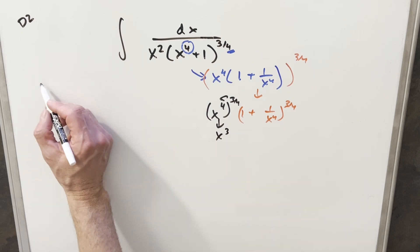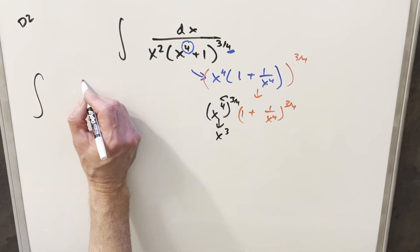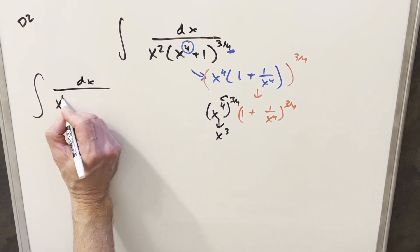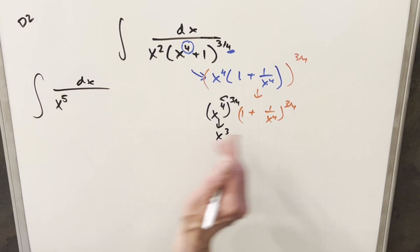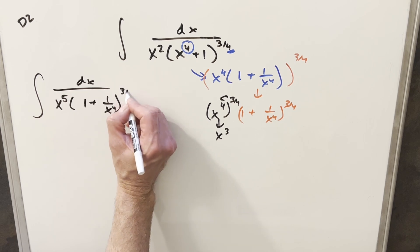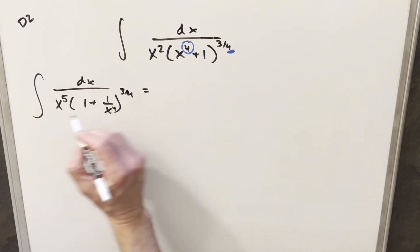So let me clean up this whole mess and we'll bring out the x cubed. So let's see, we'll still have this dx here. Then we'll have this x squared times this x cubed. So this is going to give me x to the 5th right here. And then we'll have this piece, 1 plus 1 over x to the 4th to the 3 4ths. But now I'm just going to do a quick rewrite.